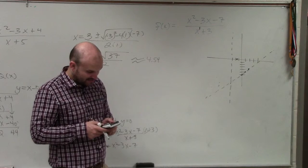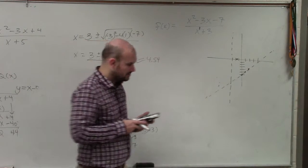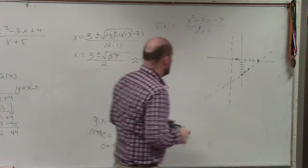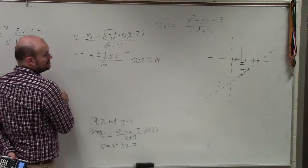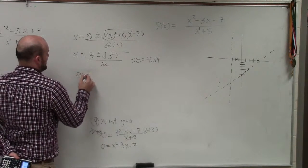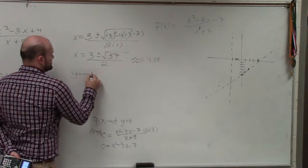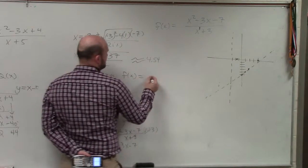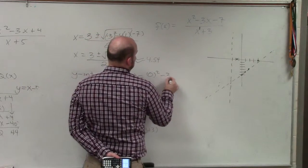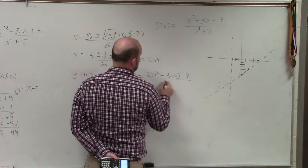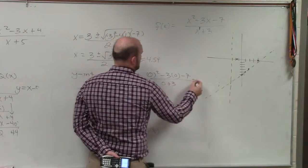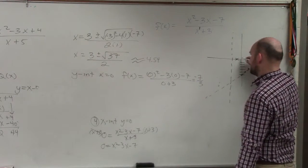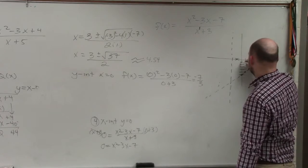So we're not done yet. The next one is now we need to figure out what the y-intercept is, right? So f of x. I'm kind of having a little bit too much conversation, especially when I'm going over this y-intercept. x equals 0. So I have f of x equals 0 squared minus 3 times 0 minus 7 divided by 0 plus 3 equals negative 7 thirds. So that's going to be at negative 2 and 1 third.